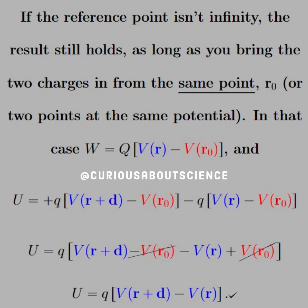In which case, the work or the energy is Q times V minus V naught. And we see here that substituting that then for the energy of the dipole,